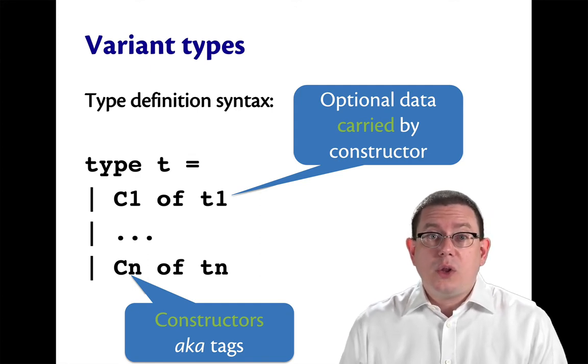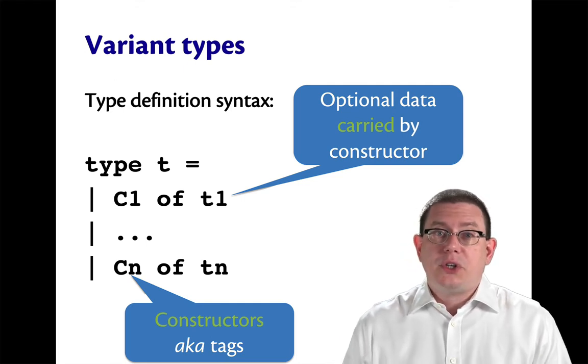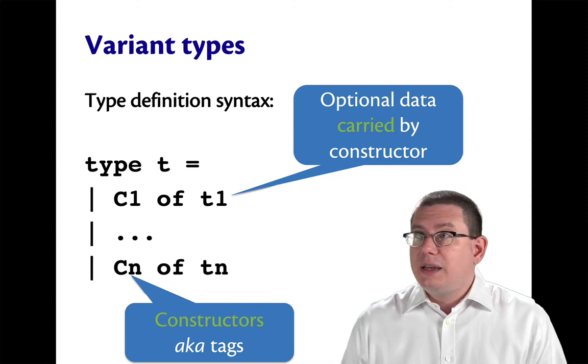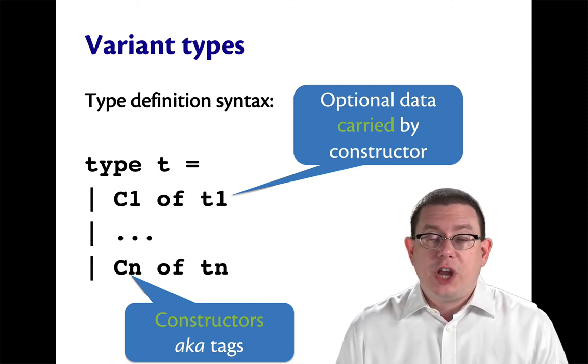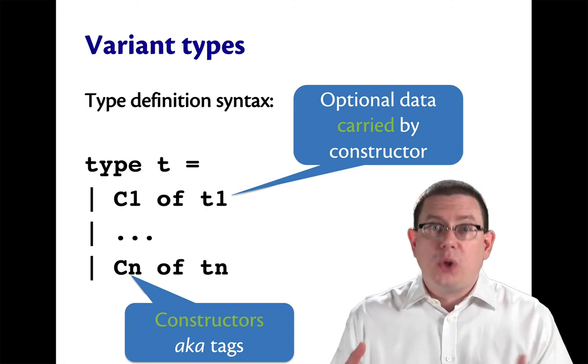The constructor can carry along data if it wishes. It's optional. It doesn't have to. We saw examples of constructors like the primary colors that didn't and examples of constructors like for shapes that did. We say that that optional data is carried by the constructor. The notion is it's carried along with it.